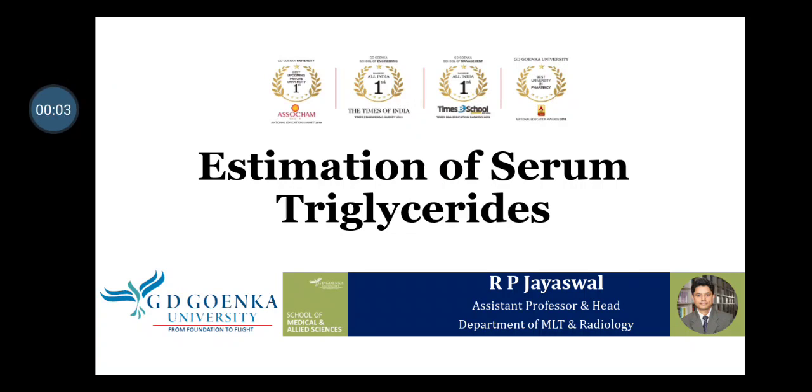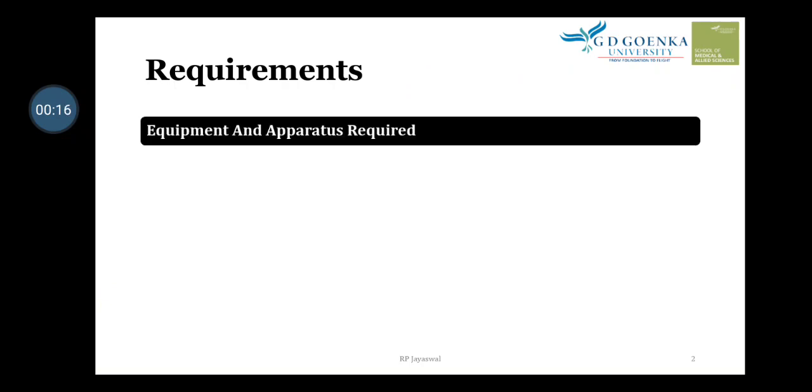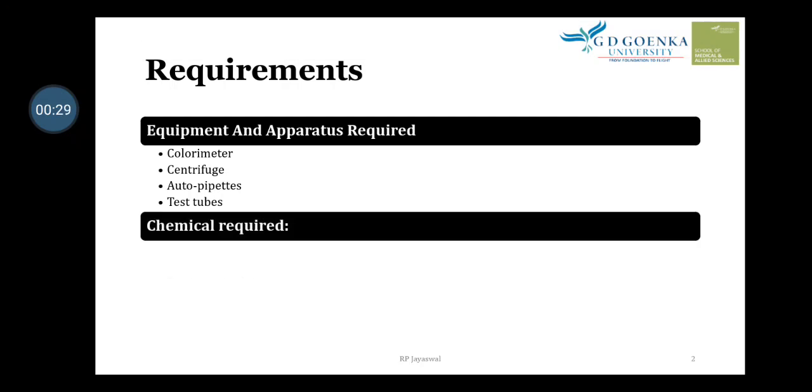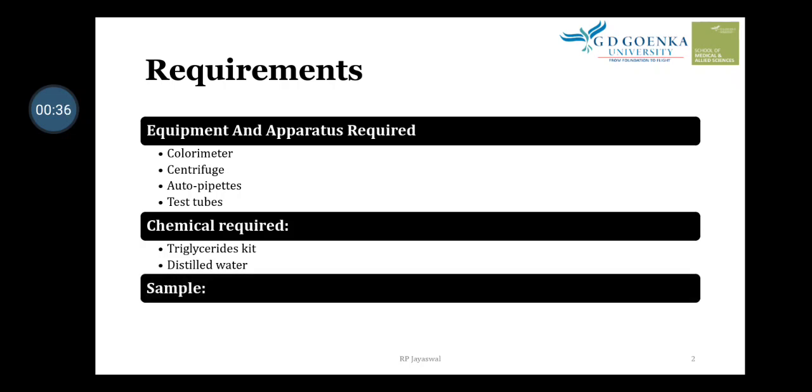Let's learn about estimation of serum triglycerides. This is a biochemistry test that requires specific equipment and apparatus: colorimeter, centrifuge, auto-pipettes, and test tubes. We need chemical reagents including triglyceride kits and distilled water. For the sample, use non-hemolytic serum or plasma from heparinized blood. Fasting for 9 to 12 hours is required before the triglyceride test.